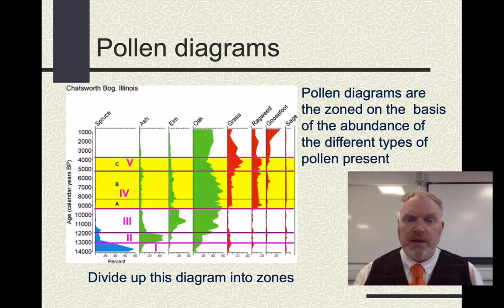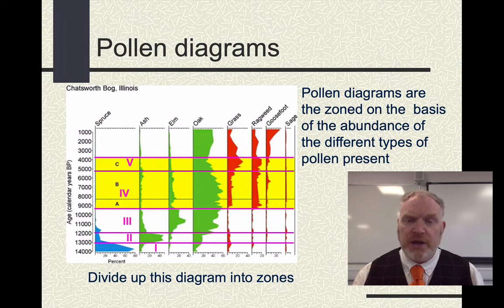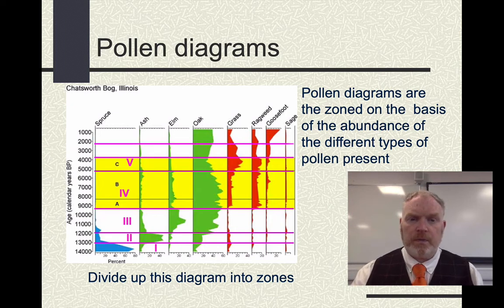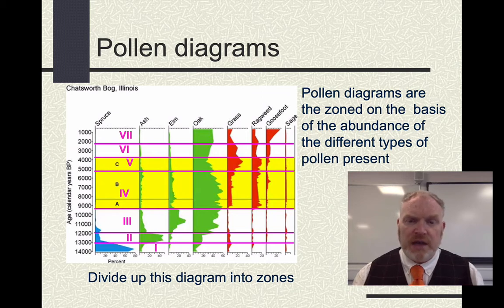Zone five, for me, goes to about 3,800 years ago. Here we can see the oak decreasing — perhaps the forest breaking up with more open areas, so there's more grass, more ragweed. Zone six: we see the oak increasing a little, but really it is the only tree. Grass is diminishing a little, and perhaps a few other species like goosefoot appearing.